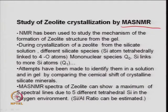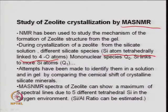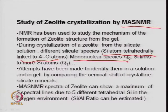During crystallization of a zeolite from the silicate solution, different silicate species exist. A silicon atom tetrahedron linked to 4 oxygen atoms is called Q₀ — a monomolecular species S₀. As Si links to more silicon atoms: Q₁, Q₂, Q₃ — a T-O-T bridging forms a cage structure where oxygen links silicon, then again oxygen, then silicon. Attempts have been made to identify them in solution and gel by comparing the chemical shift of crystalline silicate material.